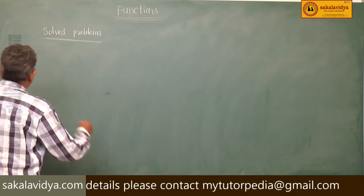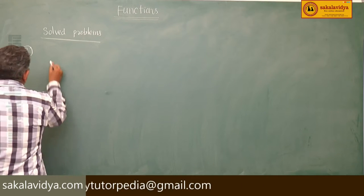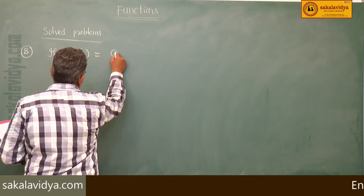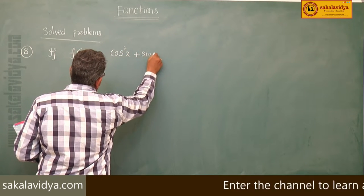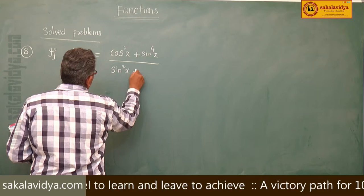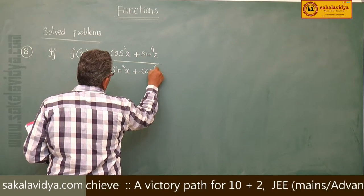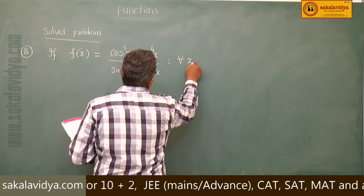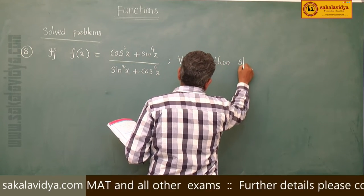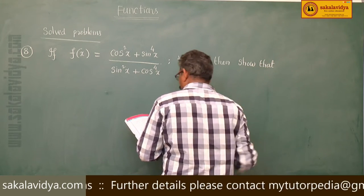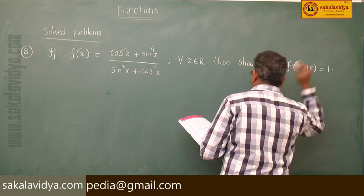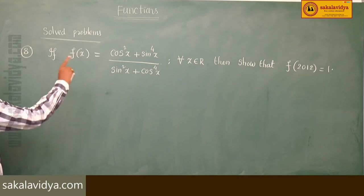Eighth problem. If f of x equals cos squared x plus sin x to the power 4, divided by sin squared x plus cos x to the power 4, for all x belonging to R, then show that f of 2012 equals 1.